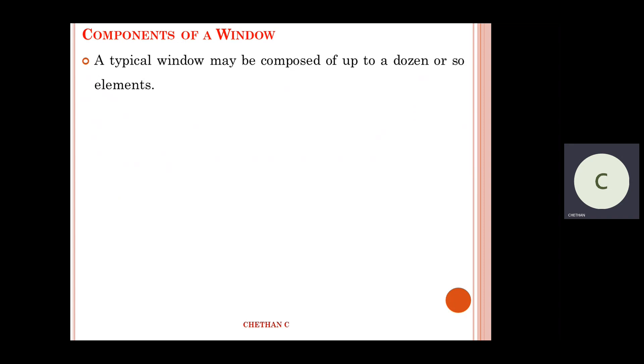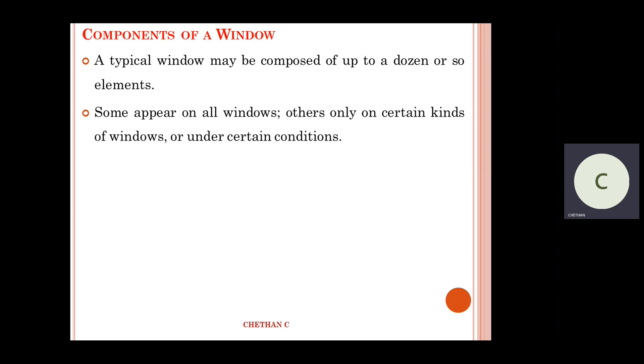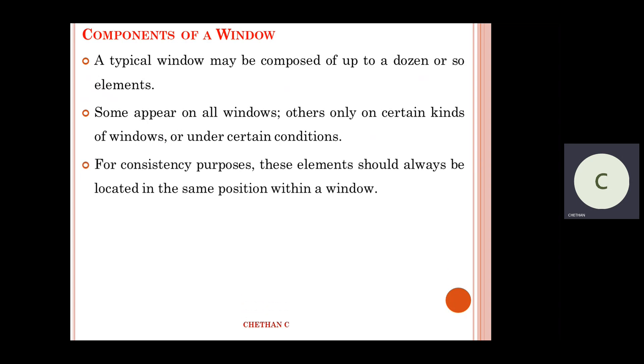The next thing is the components of a window. When you take a window, what will be there? From the textbook point of view, a typical window may be composed of two or a dozen or so elements. Some appear on all windows, others only on certain kinds of windows or under certain conditions. For consistency purposes, these elements should always be located in the same position within a window.